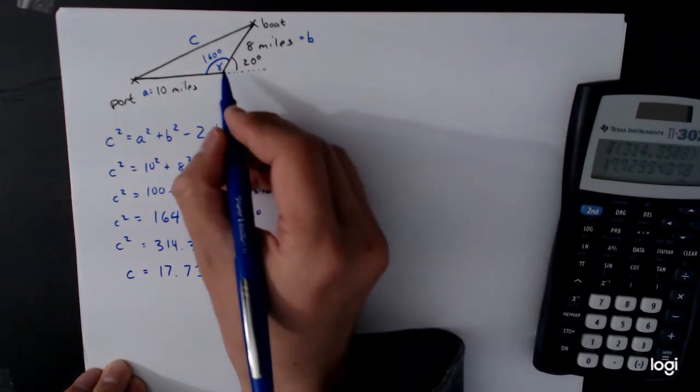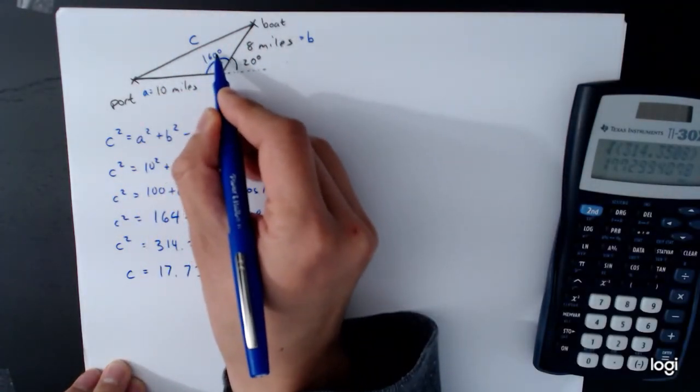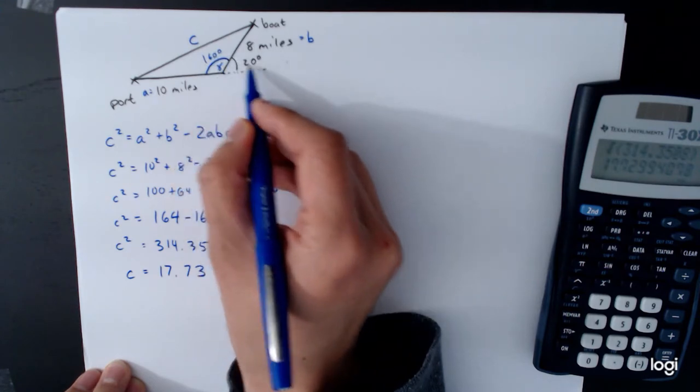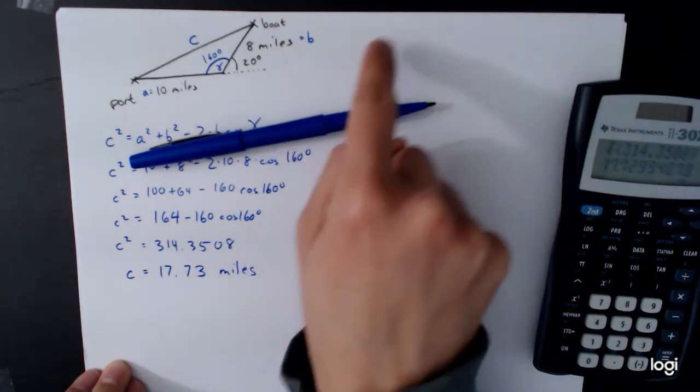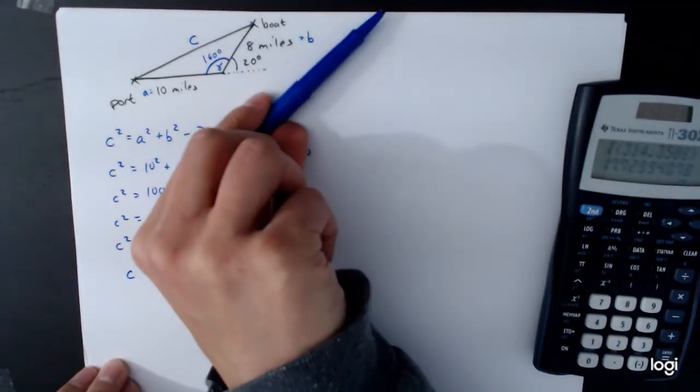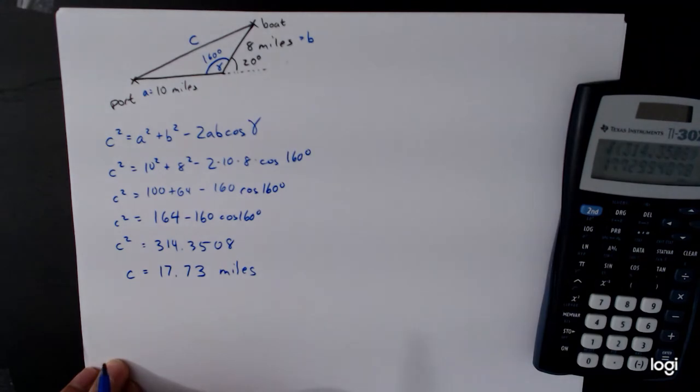So again, the big challenge here is the diagram. Labeling this angle as 20 degrees is not correct. You have to think through carefully. If you're going straight and then you turn by 20 degrees, the amount that you turn is the 20 degrees, not the angle in the triangle. Let's look at another example.